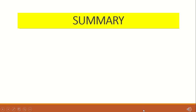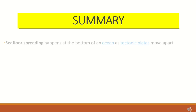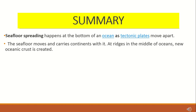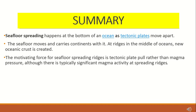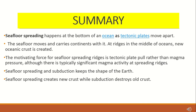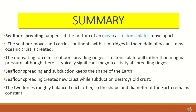To summarize the entire discussion, you have learned that seafloor spreading happens at the bottom of the ocean as tectonic plates move apart. The seafloor moves and carries continents with it. At ridges in the middle of oceans, new oceanic crust is created. The motivating force for seafloor spreading is tectonic plate pull rather than magma pressure, although there is typically significant magma activity at spreading ridges. We also learned that seafloor spreading and subduction keeps the shape of the earth — seafloor spreading creates new crust while subduction destroys old crust, and the two forces roughly balance each other so the shape and diameter of the earth remains constant.